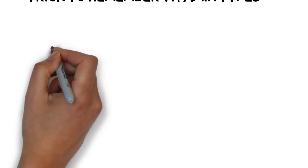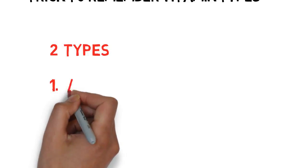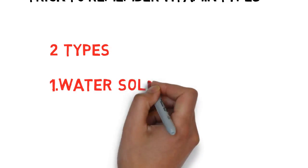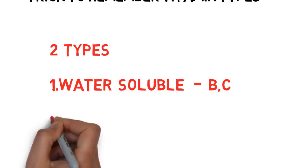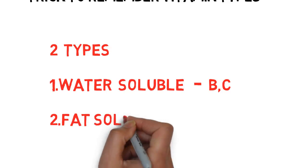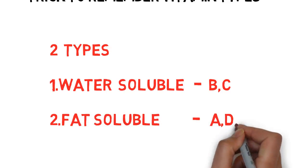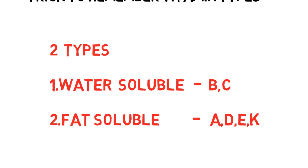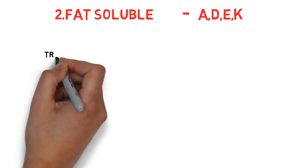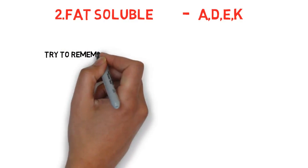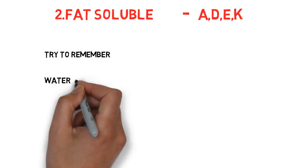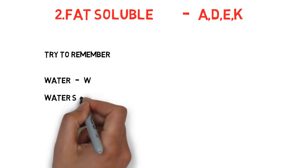Friends, there are total six vitamins and it is divided into two types. First one, water soluble - water soluble vitamins B and C. Next one, fat soluble - fat soluble vitamins A, D, E, K. Friends, please be concentrated on this trick because it is a simple topic and sure we can expect one question in every government exam. So please follow this trick.